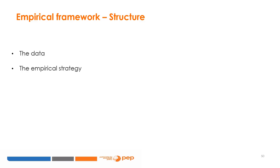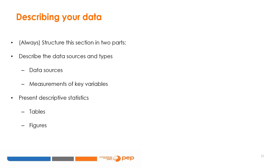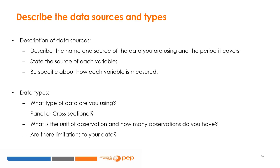In an empirical paper, writing the conceptual framework also involves two main steps: one, a description of the data; and two, a description of the empirical strategy. It is important that every part of your paper supports your story — this includes the data. Describe the data you are using, where you found it, what variables it contains, and any other characteristics of interest. This section usually contains two parts: the first describes the name and source of the data, the period it covers, and the key variables measured. The second part presents relevant descriptive statistics of the data you are using.